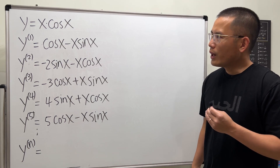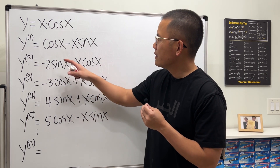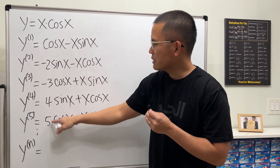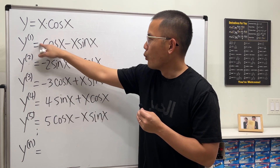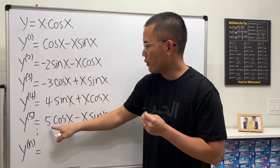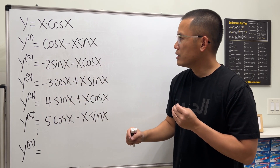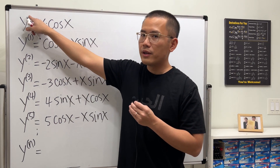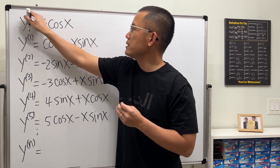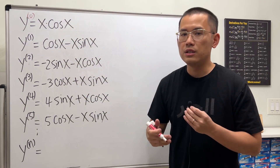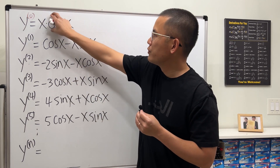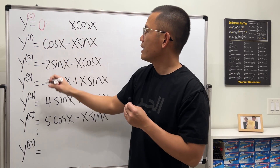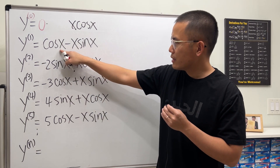Notice that it starts with x times cosine x. If you look at the parts without x, they have coefficients 1, 2, 3, 4, 5, with some negative. I'll put down a 1 here and note that the zeroth derivative is just the function itself, and then move it over.